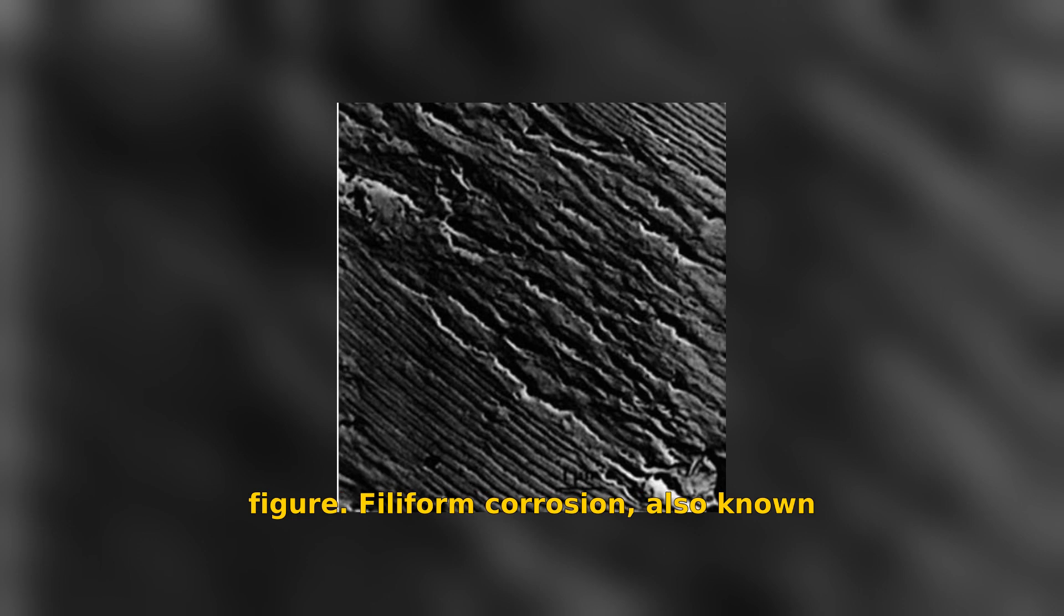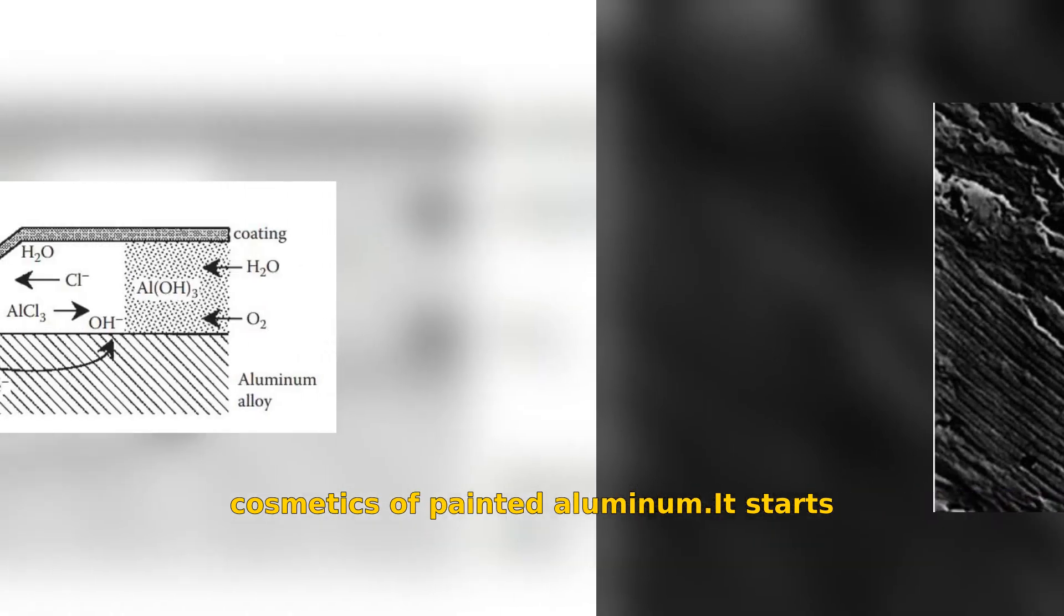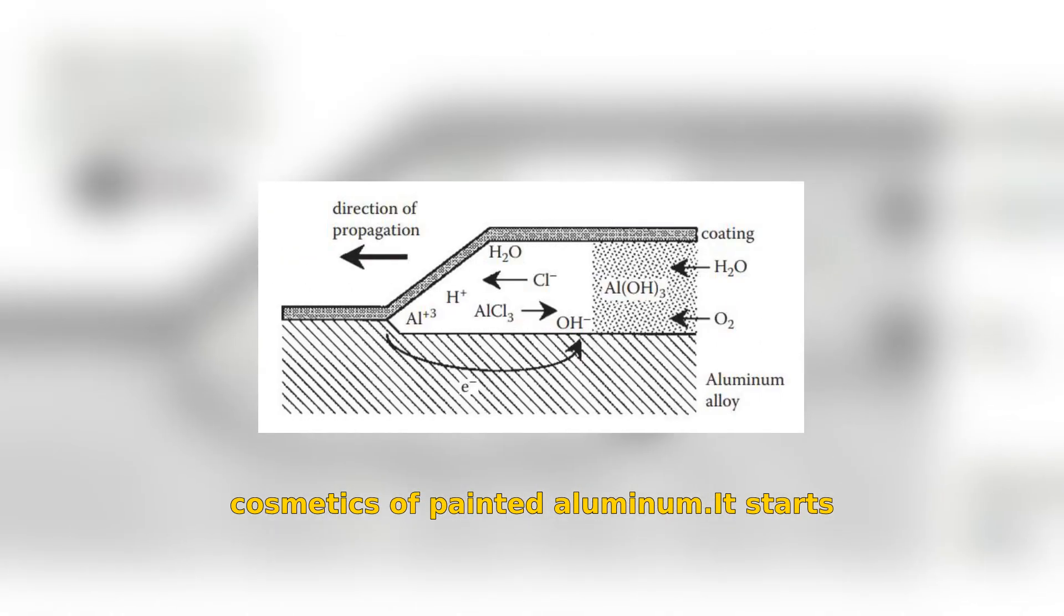Filiform corrosion, also known as worm-track corrosion, affects the cosmetics of painted aluminum. It starts at defects in the paint and requires high humidity and chlorides to propagate.